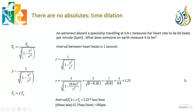Look at how staggering this is. You as the astronaut measure your heart rate to be 60 beats per minute. I measure your same heart rate and get 48 beats per minute, and we are both correct. It is not an artifact because you're traveling, or some funny trick of measurement — no. It is because time is no longer absolute. And this is a remarkable fact.